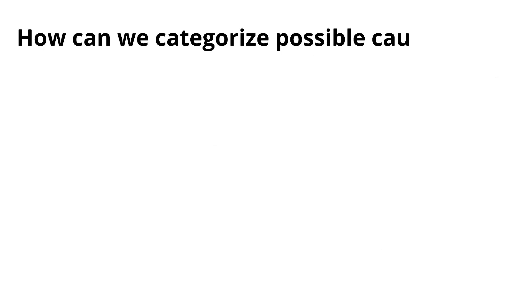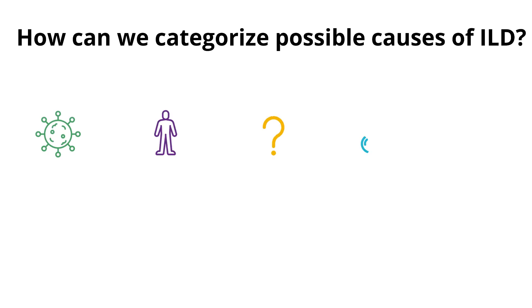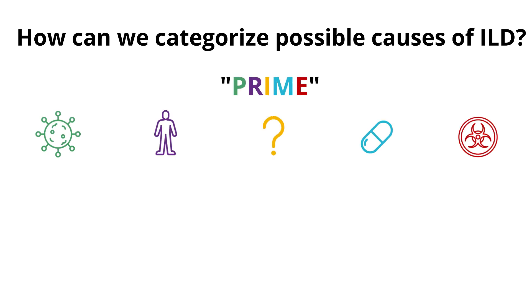How can we categorize possible causes of ILD? Most people learn the alphabet soup of ILD, but a more clinically relevant way to think of ILD is to use these five categories. Think of the mnemonic PRIME for what to ask your patients or what to look for on chart review.